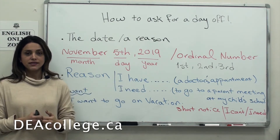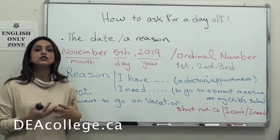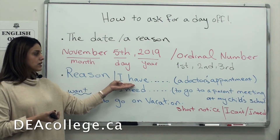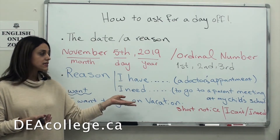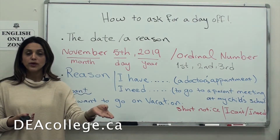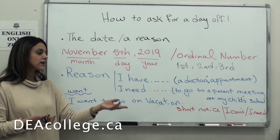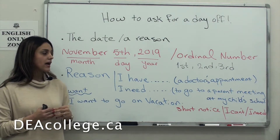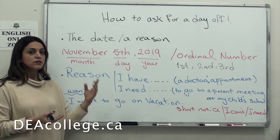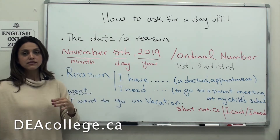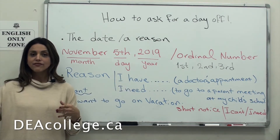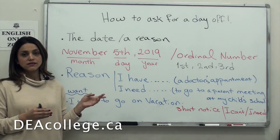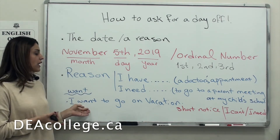Now let's talk about the reason. Whenever you want to ask for a day off, you must mention why you want to take that day off. You have to start the reason with 'I have' or 'I need.' For example, 'I have a doctor's appointment.' Or 'I need to go to a parents' meeting at my child's school.' If you want to go on a vacation, you must use 'want' — 'I want to go on a vacation.'